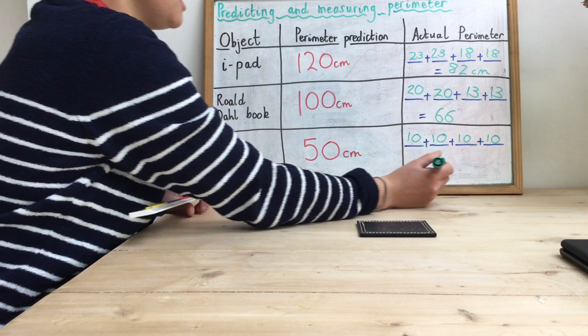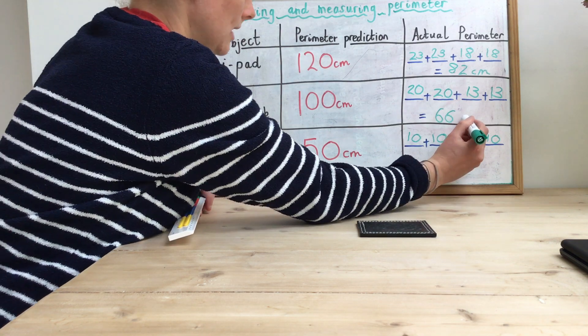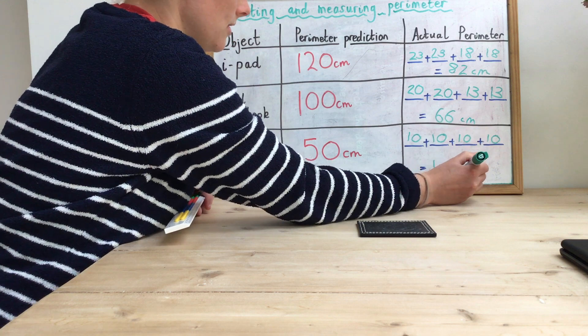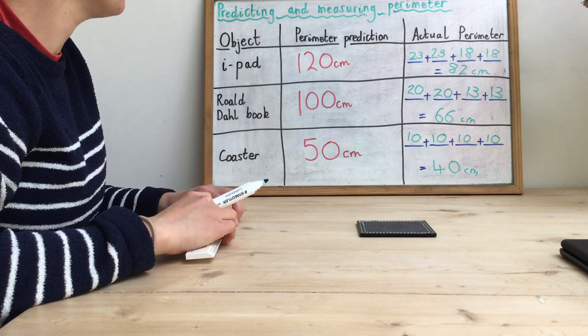Ten, twenty, thirty, forty. So the perimeter of my coaster is 40. Oh, I need to add my centimeters onto here, just to be clear. So my prediction wasn't too bad. I wasn't too far out.